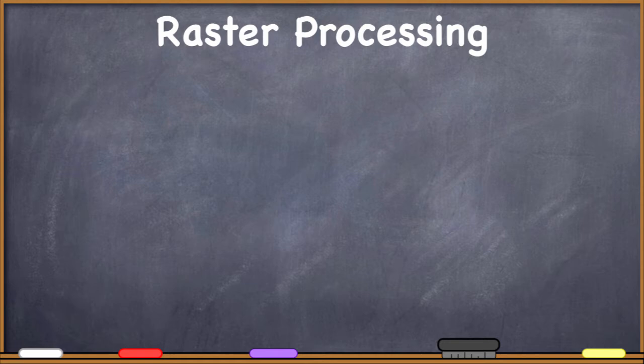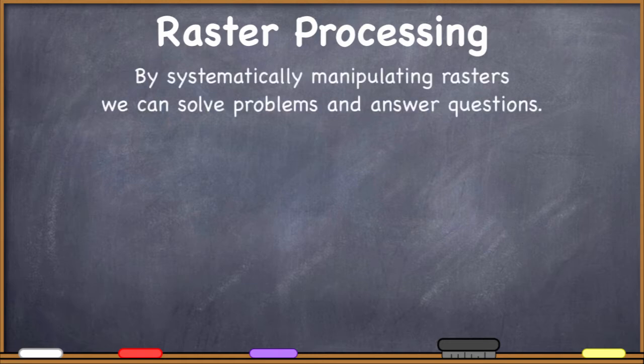This is kind of the equivalent of geoprocessing when we were talking about vector datasets. We learned that if we systematically manipulated vector datasets in certain ways using certain tools, and we had this core vector toolset, we could come up with answers to questions and solutions to problems. Here we're talking about basically the equivalent in raster data theory. By systematically manipulating rasters, we can solve problems and answer questions.